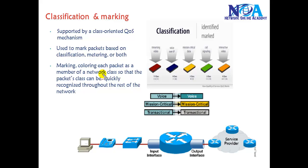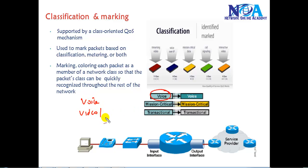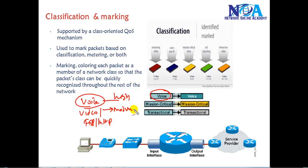The first mechanism is classification and marking. In your network, you may be sending voice traffic, video traffic, critical traffic like database traffic, and other traffic like FTP or HTTP. The first thing we do is classify traffic as high priority, medium priority, and low priority traffic. Classification is a method of defining different types of traffic into different categories.